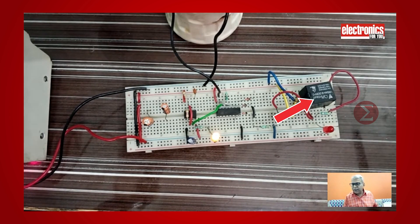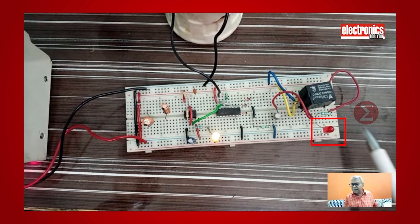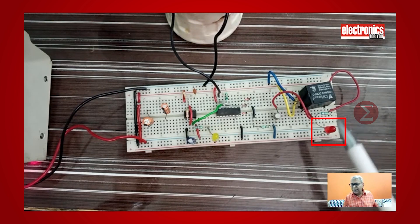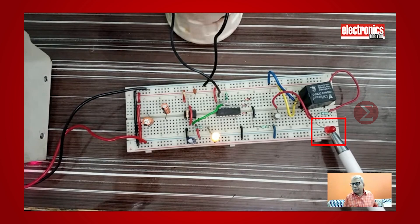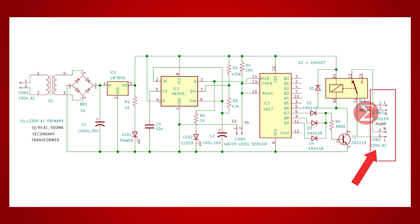This transistor is taking input from the decade counter and is used here to drive the relay. We have used a relay here in the prototype and use this LED as indication for turning on and off of the cooler pump. You have to connect this to the cooler motor on installing this with the cooler.